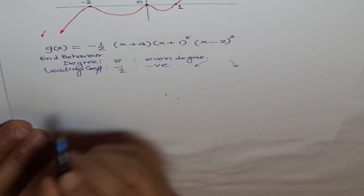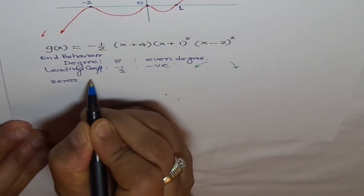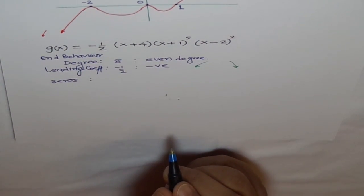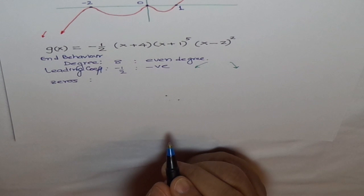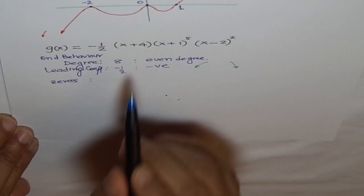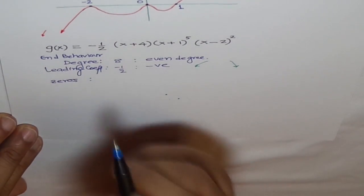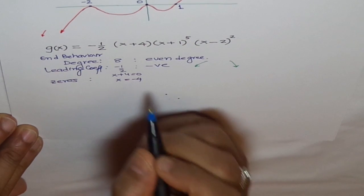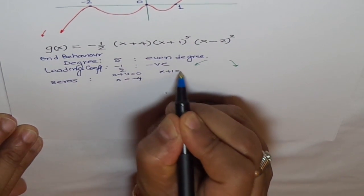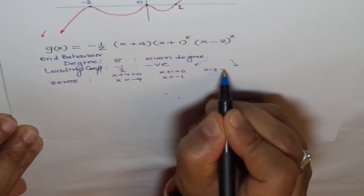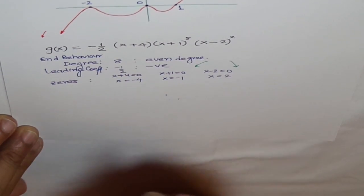Now we will analyze our zeros. At x-intercepts, zeros decide the behavior of our graph. The order or multiplicity of zero decides the behavior of the graph at x-intercepts. Let's equate each factor to zero. First, x plus 4 equals zero gives x equals minus 4. Second, x plus 1 equals zero gives x equals minus 1. Third, x minus 2 equals zero gives x equals 2.